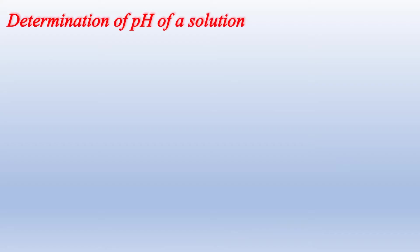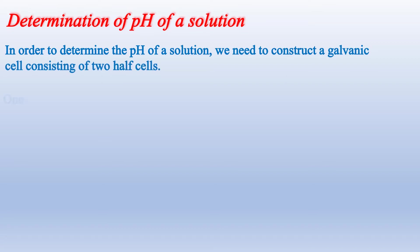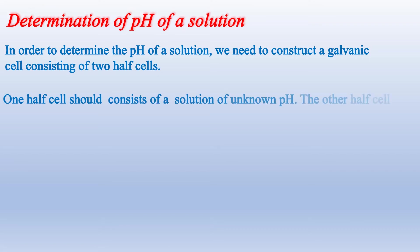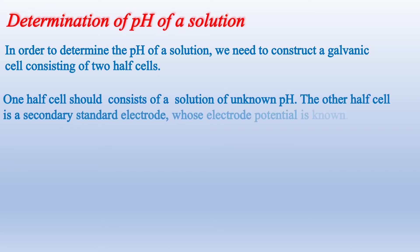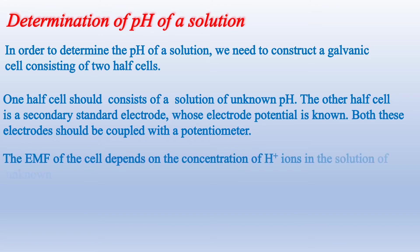In order to determine the pH of a solution, we need to construct a galvanic cell consisting of two half cells. One half cell should consist of a solution of unknown pH. The other half cell is a secondary standard electrode whose electrode potential is known. Both these electrodes should be coupled with a potentiometer. The EMF of the cell depends on the concentration of H⁺ ions in the solution of unknown pH.